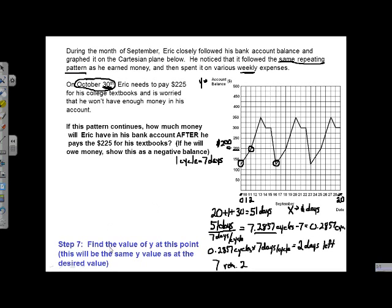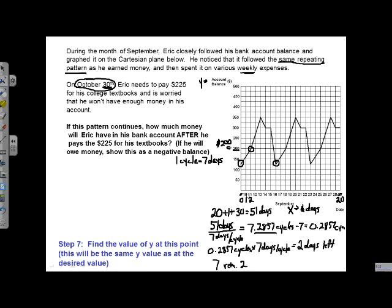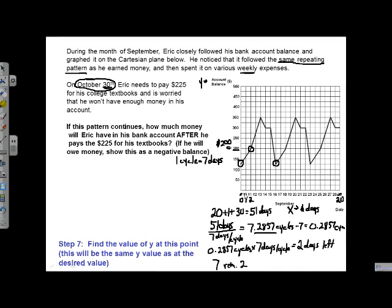And so our step 7, we want to find the value of Y at this point. I already did that one actually. So at 51 days in or on October 30th, we'll have the same account balance as 2 days in, which is September the 11th. And we can see that's $200.